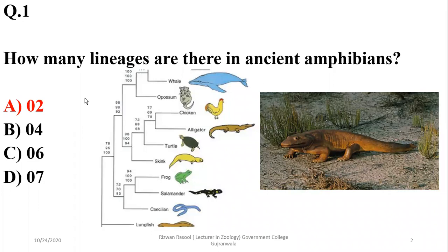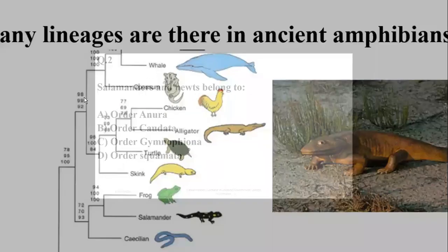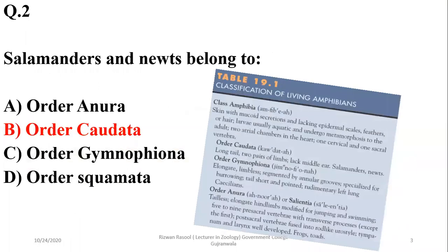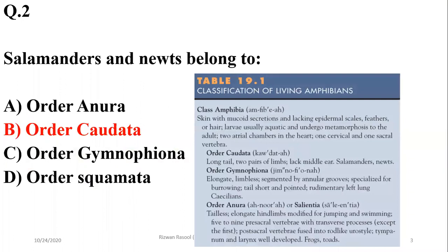So the right option is A. Question number two: salamanders and newts — they belong to the order Caudata, as tailed amphibians.